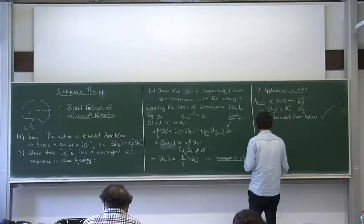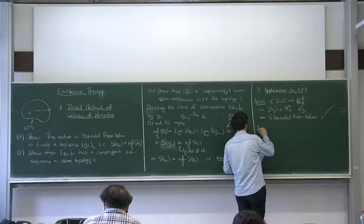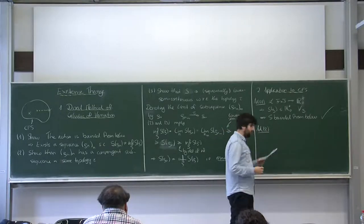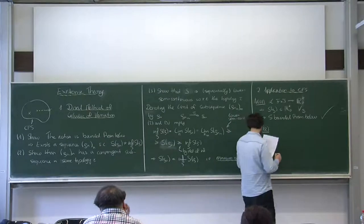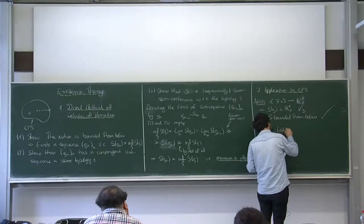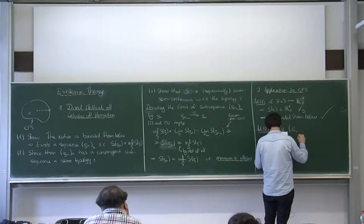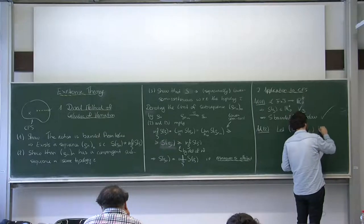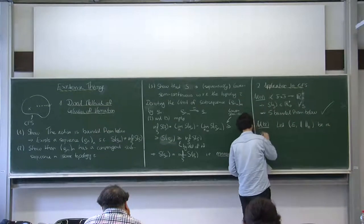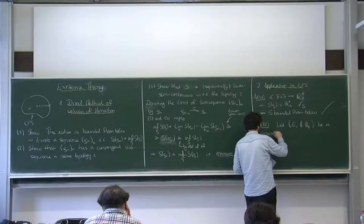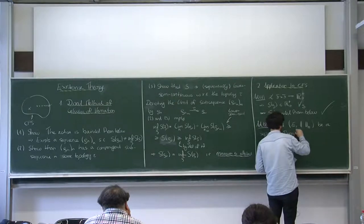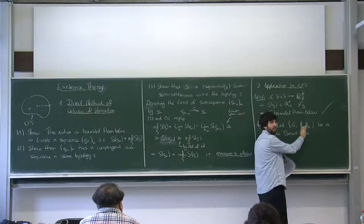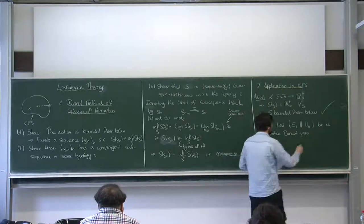Now we'll talk about the second point. The first step will be to recall the Banach-Alaoglu theorem. We just choose a letter E with some norm, and let E be a separable Banach space. This means we have a vector space, a norm on it, and this space is complete. This is a separable Banach space.